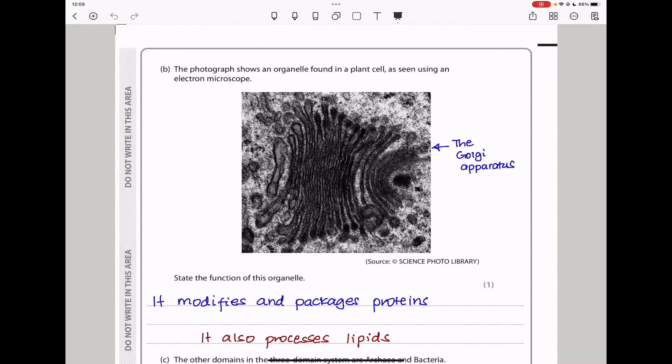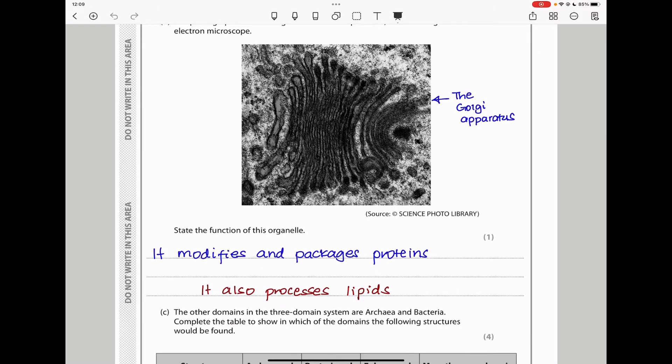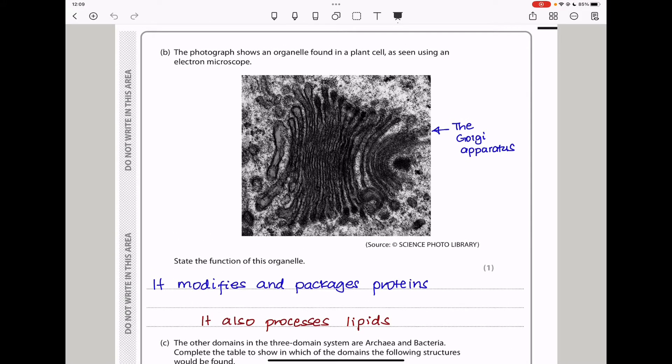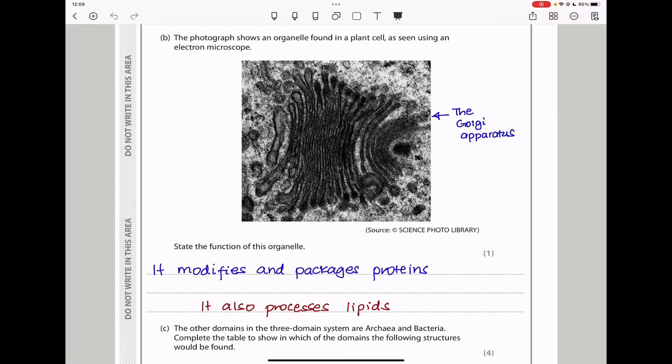Here they say, the photograph shows an organelle found in a plant cell, as seen using an electron microscope. So they say state the function of this organelle. This organelle is the Golgi apparatus, and it modifies and packages proteins. Sometimes you could say it also processes and packages lipids that are going to be excreted mainly out of the cell.